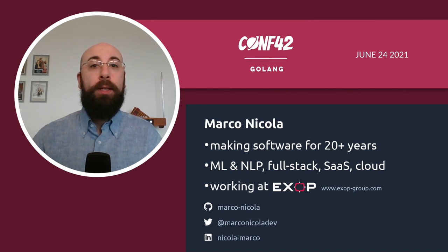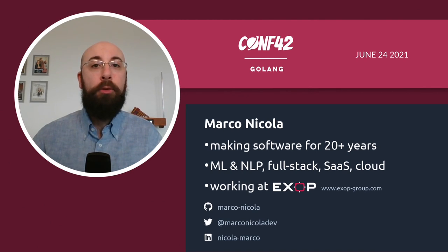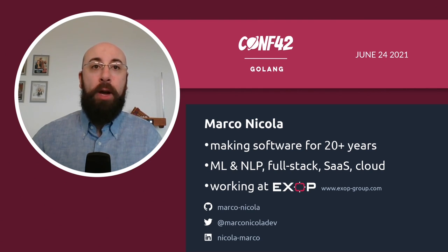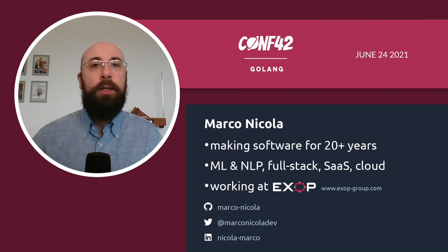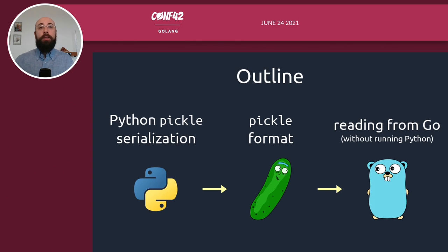I'm currently employed at Exop. It's a German company and our main business is mobility risk management. If you want to be in touch with me, you can find me of course on GitHub or Twitter or LinkedIn. The references are there on screen. In this presentation, I'm going to show you how you can effectively deserialize Python objects in Go with the help of a little library called Go Pickle. This is going to be a sort of cross-languages talk.